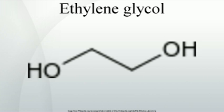Ethylene glycol disrupts hydrogen bonding when dissolved in water. Pure ethylene glycol freezes at about −12°C, but when mixed with water, the mixture does not readily crystallize, and therefore the freezing point of the mixture is depressed. Specifically, a mixture of 60% ethylene glycol and 40% water freezes at −45°C (−49°F). Diethylene glycol behaves similarly.